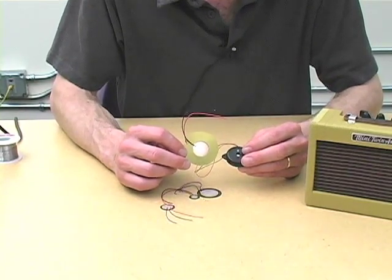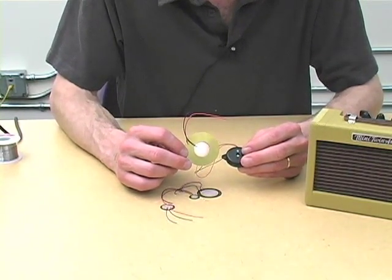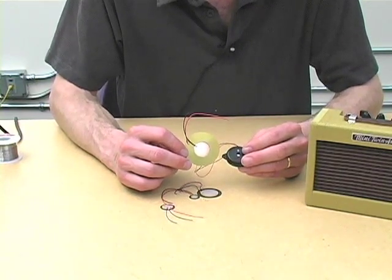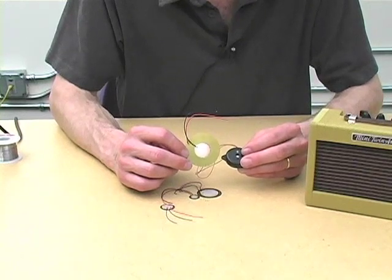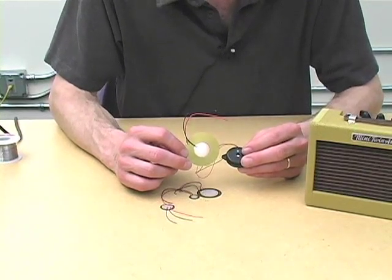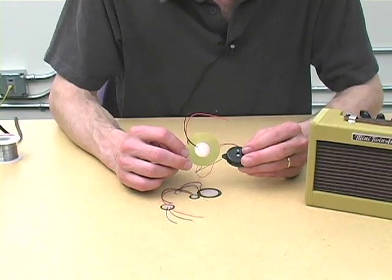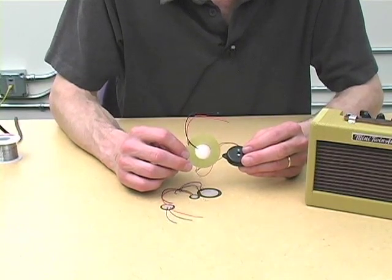Instead of using electromagnetism, it uses a crystal property. Hit the crystal with a bit of electricity and it twitches and makes a little bit of mechanical vibration, i.e. sound. Hit the piezo disc with a hammer, the crystal deforms and it generates an electrical signal.